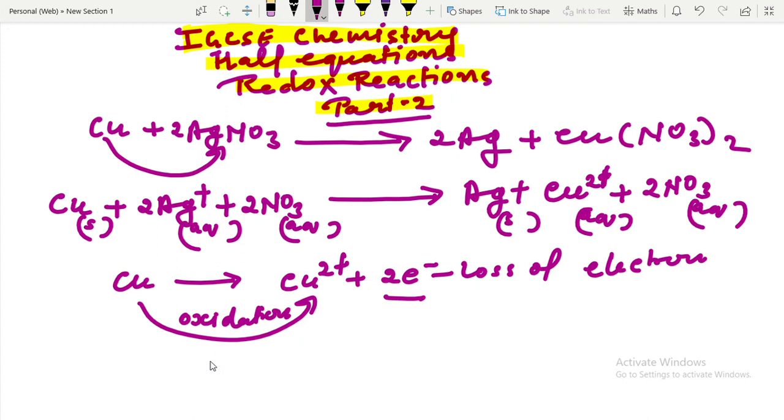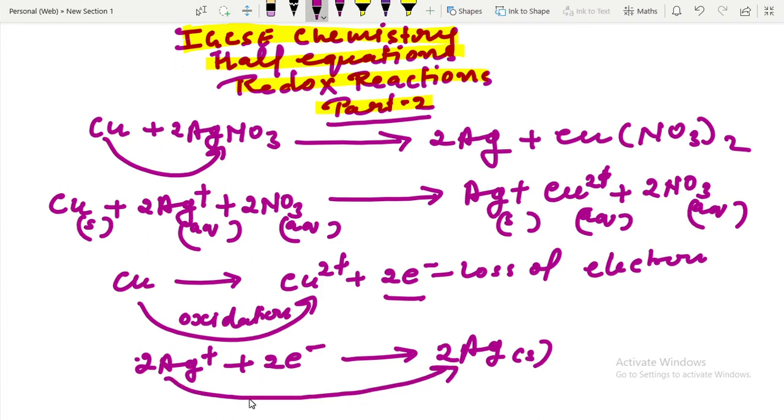On the other hand, silver ions have gained electrons to become reduced. It can be represented by 2Ag plus converted into 2Ag. Here we can see silver ion becomes silver after gaining two electrons, so it is reduced. It is gain of electron and here copper metal is losing electron.